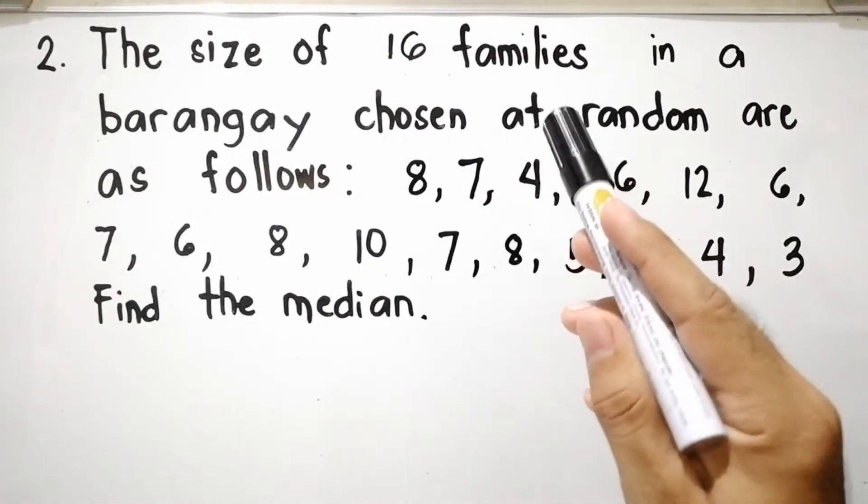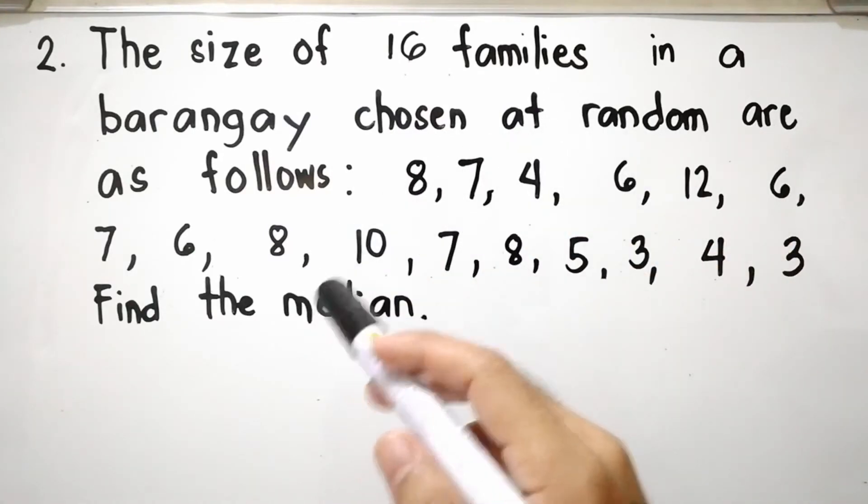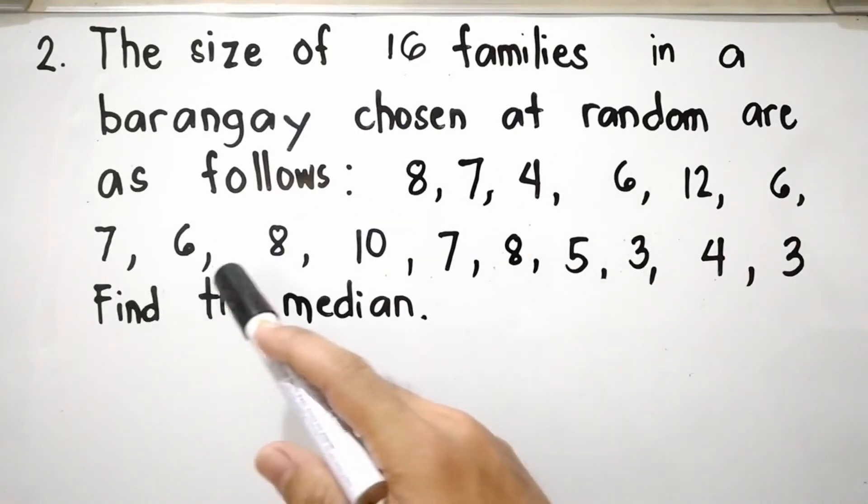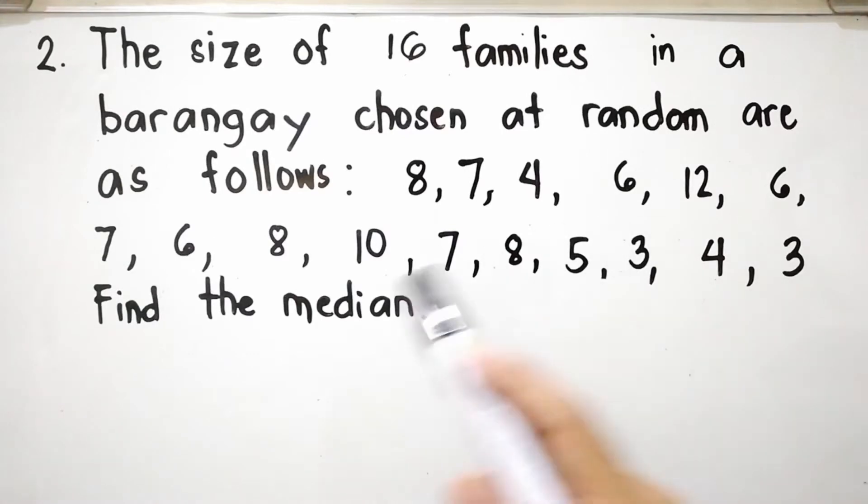Let us have example number 2. The size of 16 families in a barangay chosen at random are as follows: 8, 7, 4, 6, 12, 6, 7, 6, 8, 10, 7, 8, 5, 3, 4, 3. Find the median.